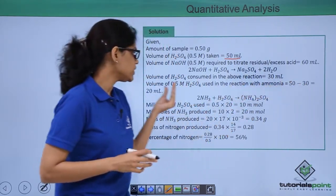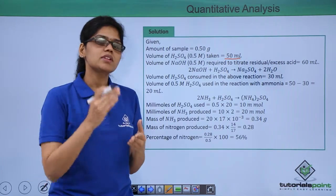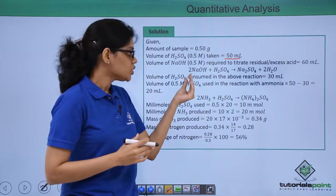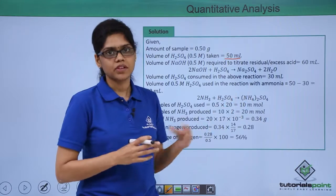So the reaction between sulfuric acid and ammonia is 2 moles of ammonia reacting with 1 mole of sulfuric acid giving us ammonium sulfate.